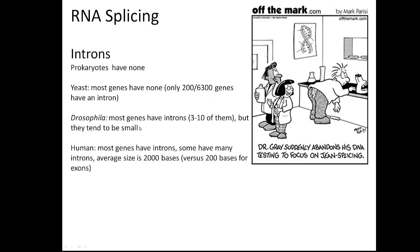Drosophila is something sort of intermediate — most genes do have introns, but there are not so many of them, and these introns tend to be fairly small.